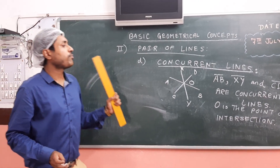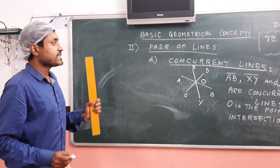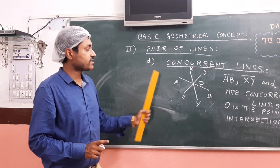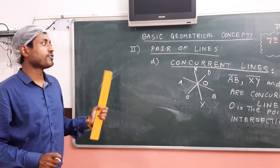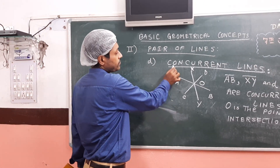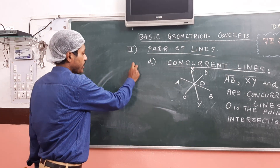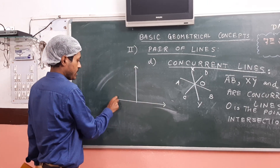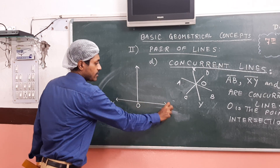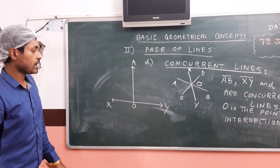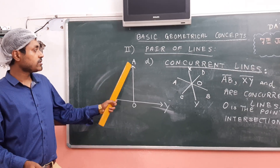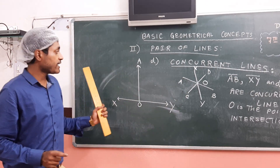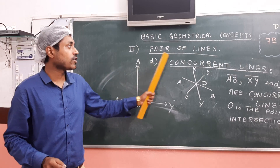An important thing to note: all perpendicular lines and concurrent lines are intersecting lines, because they do intersect each other at a single point. But it is not the other way around. Perpendicular lines intersect at a point, but they are not concurrent lines, because only two lines can be perpendicular to each other at a single point — not more than two. So perpendicular lines may be intersecting lines, but they cannot be concurrent lines.